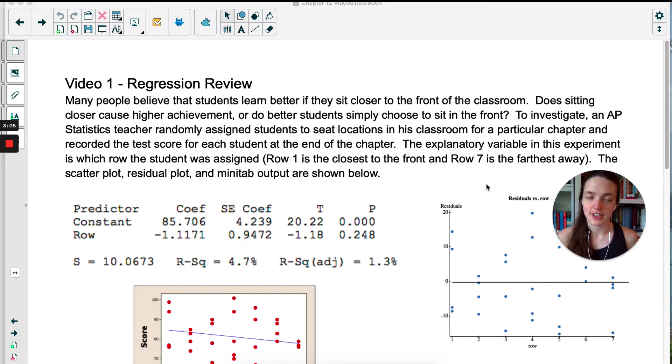Okay, so for this video, and actually the next two, we're going to be using this scenario where we're just wondering if students learn better if they sit closer to the front of the classroom. Our main question is, does sitting closer cause higher achievement, or do better students simply choose to sit in the front of the classroom? So an AP statistics teacher randomly assigned students to seat locations in his classroom for a particular chapter and then recorded their test scores at the end of the chapter. The explanatory variable here is the row that the student was assigned. So row one is going to be closest to the front, row seven is the farthest away.